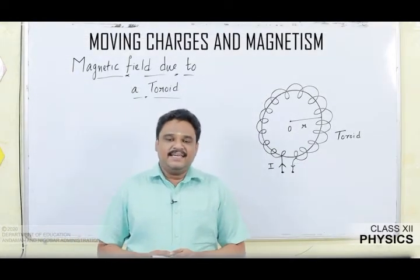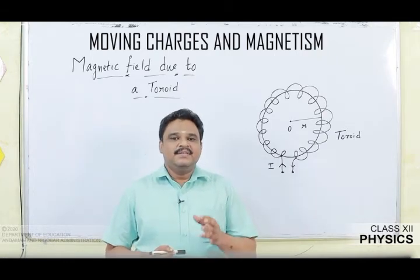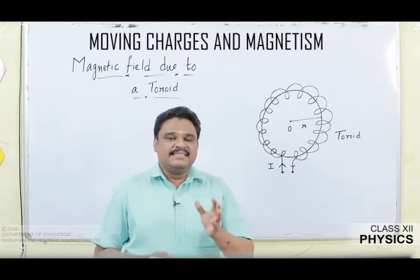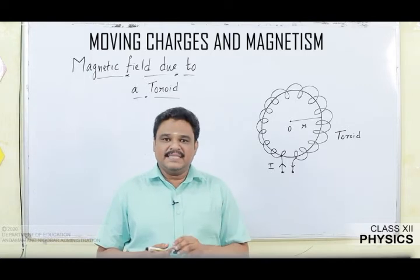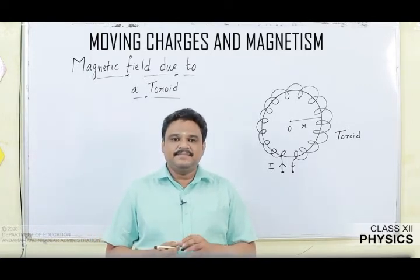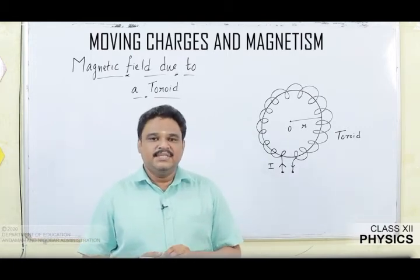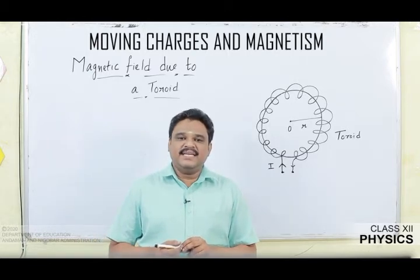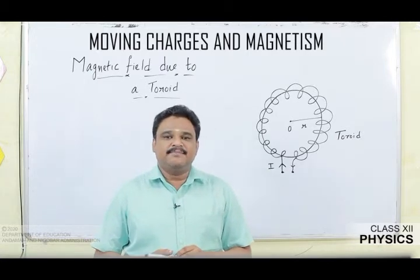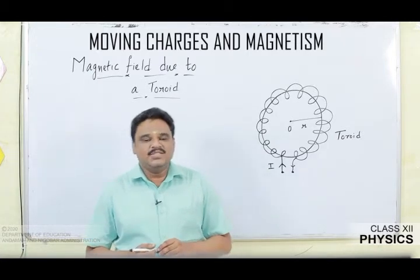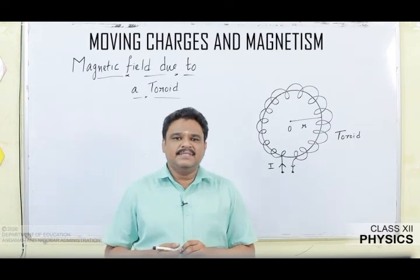Hello children. Today I am going to continue with the topics of Ampere's circuital law. On the last day, we discussed the statement of Ampere's circuital law and proved it for a circular path and also for an arbitrary path. We then discussed two applications — finding the magnetic field due to a straight long current-carrying wire, and deriving the expression for magnetic field due to a current-carrying solenoid. Now I am going to get into the third application of Ampere's circuital law.